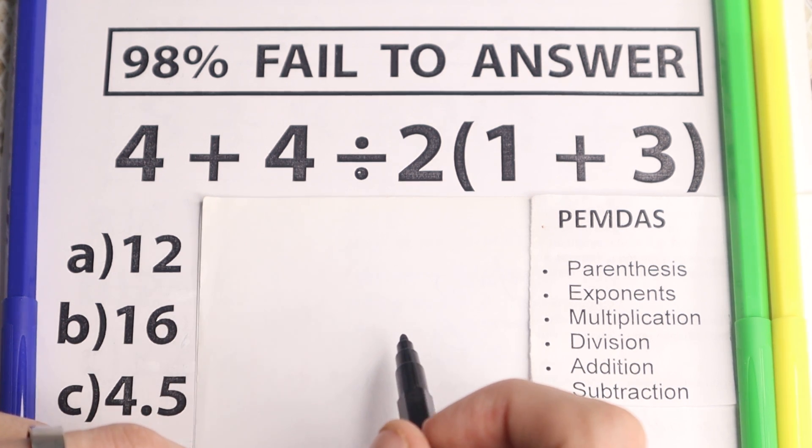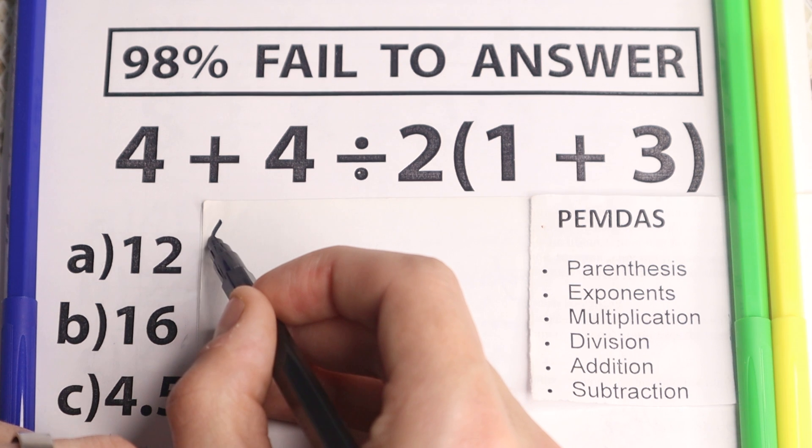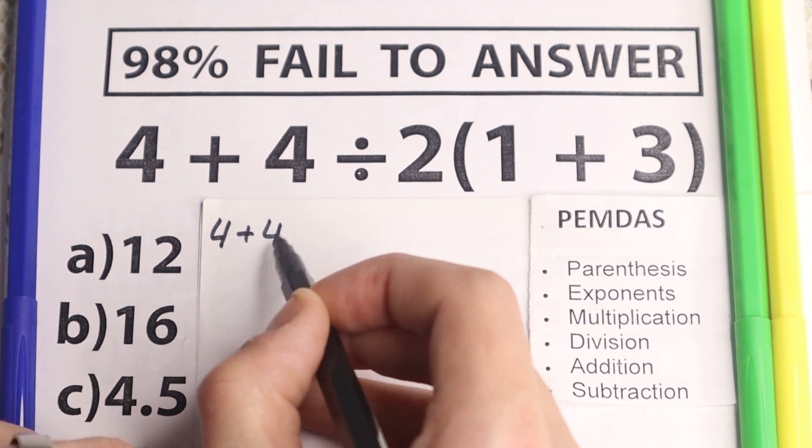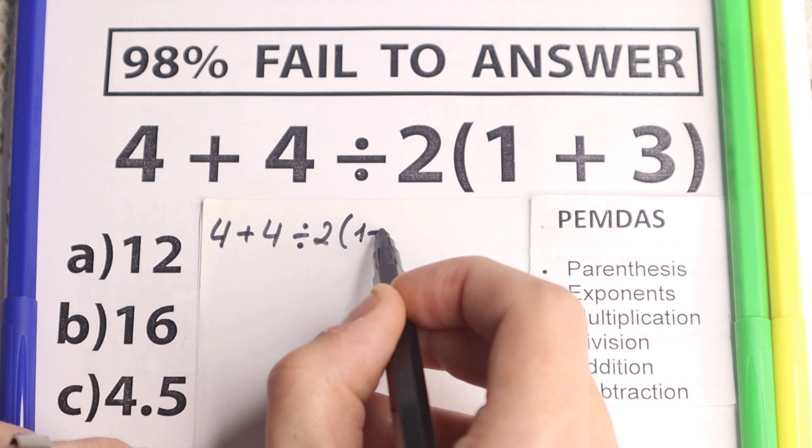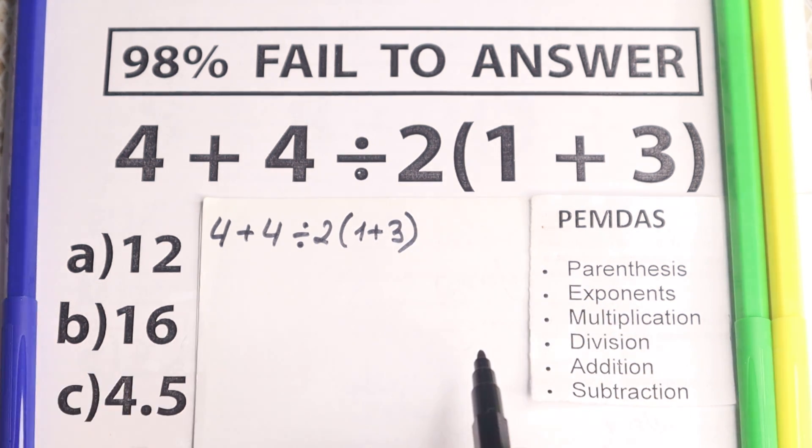And let's solve this question according to PEMDAS. First of all, I re-read this problem real quick. So 4 plus 4 divided by 2 and in parentheses, 1 plus 3. And I take my red pen, I just want you to see these steps.